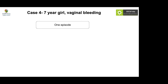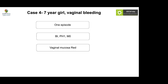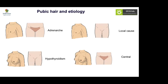Case 4: A seven-year-old girl presented with a single isolated episode of vaginal bleeding, no breast development, no pubic hair development, and red vaginal mucosa. The absence of any clinical signs of estrogenization and the red vaginal mucosa indicate this is not an endocrine cause of bleeding. This is a gynecological bleed — possible causes include a foreign body, tumor, or trauma.